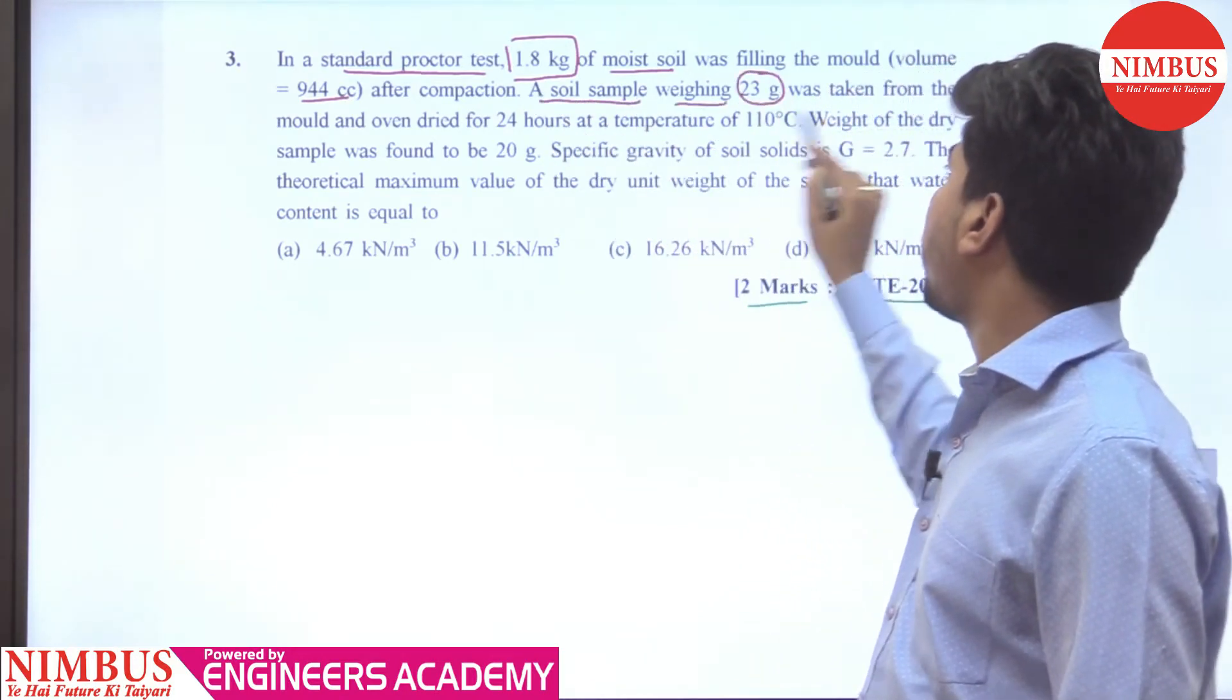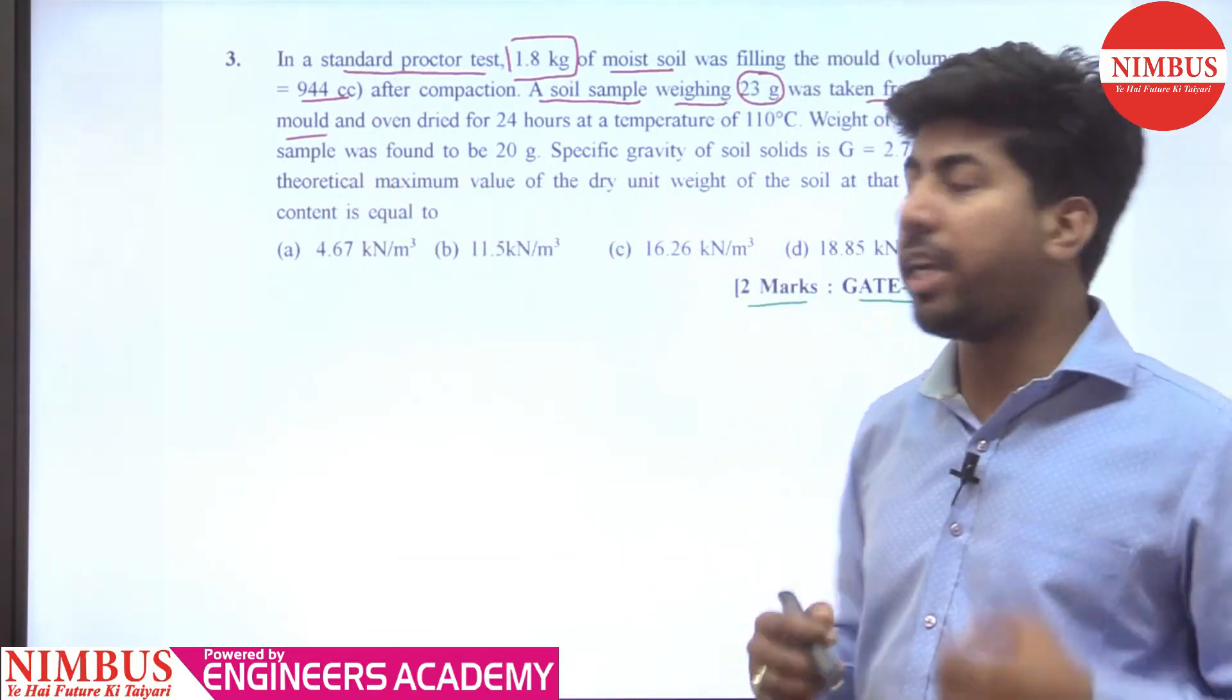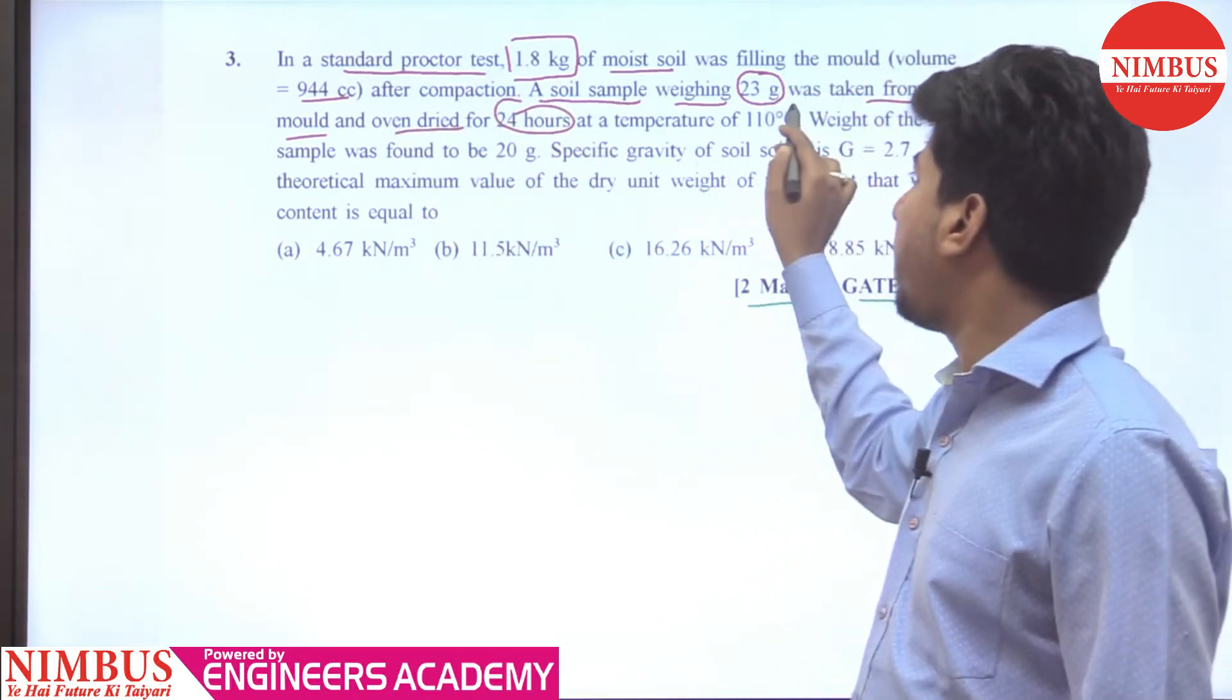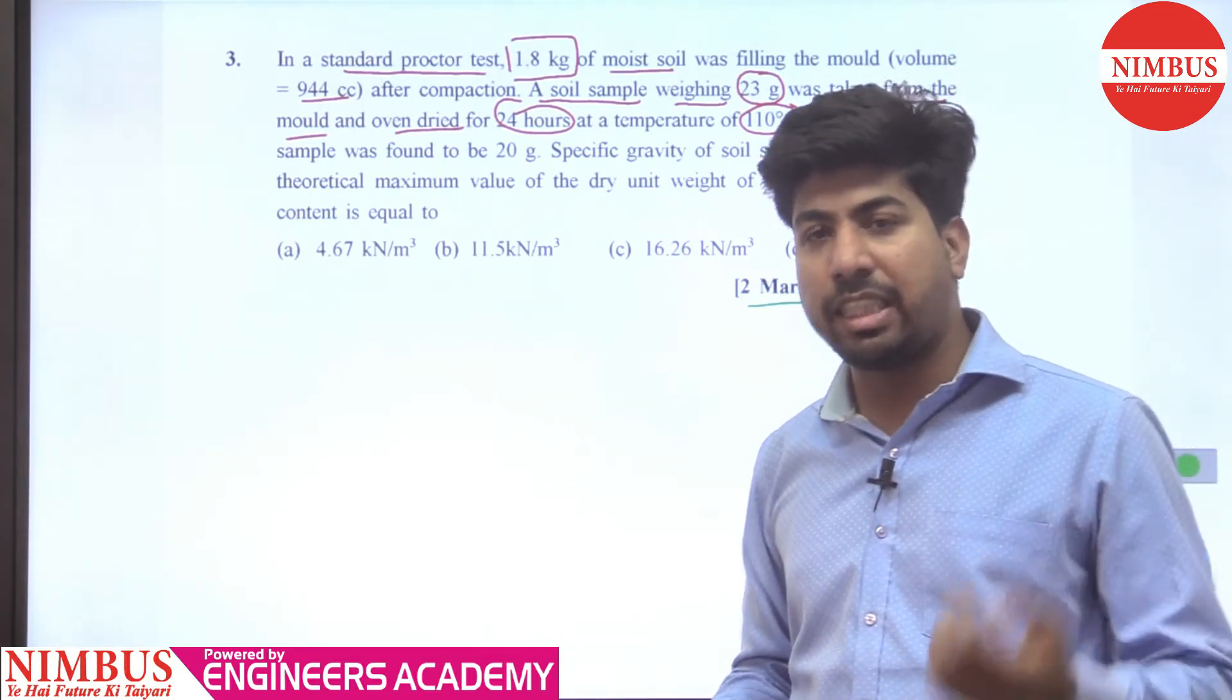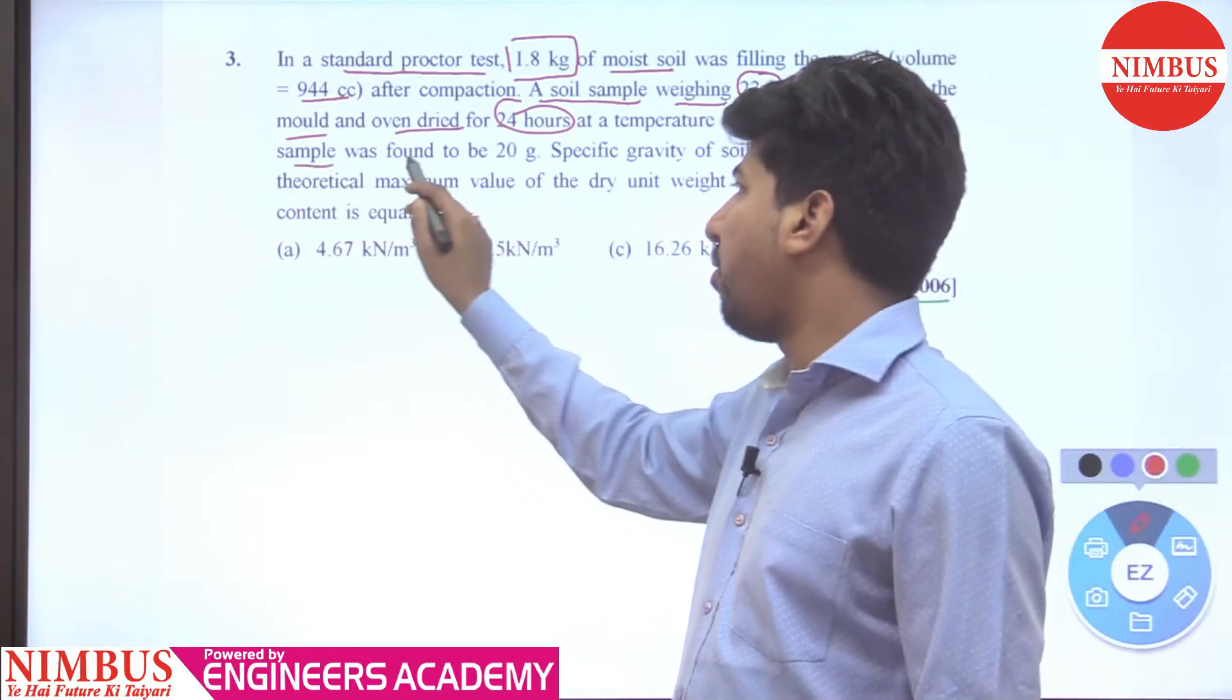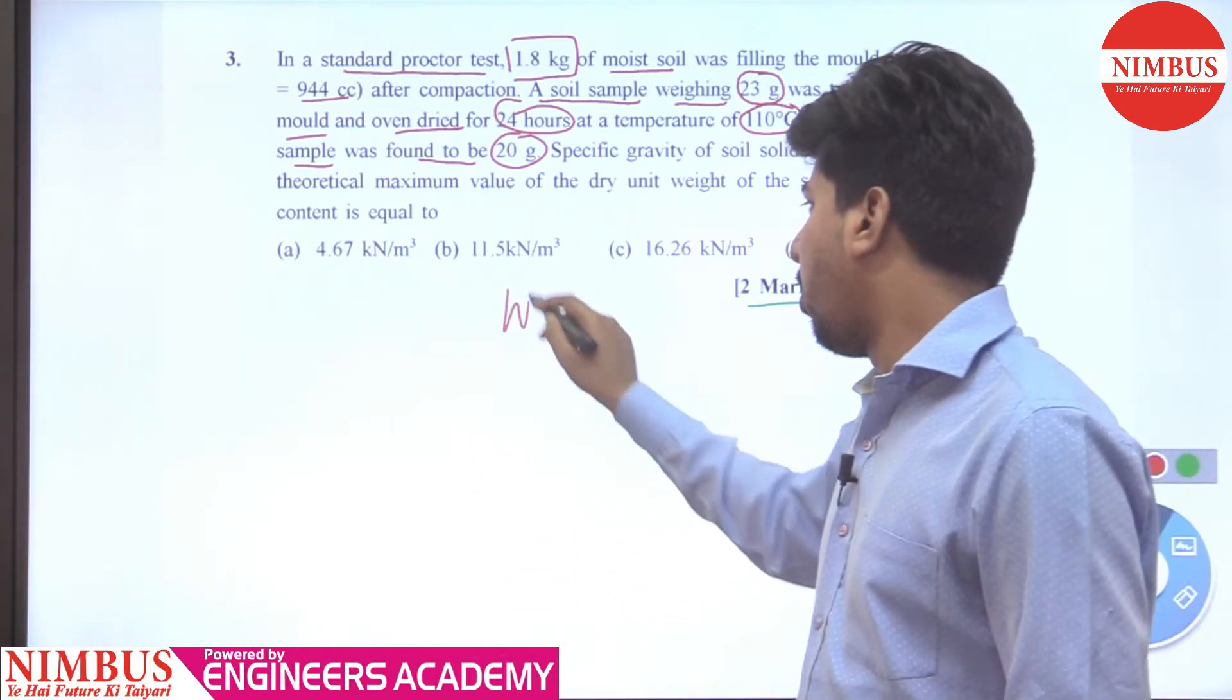1.8 kg moist soil was taken from the mold and oven dried for 24 hours at a temperature of 110 degrees Celsius. Then again the weight of the dry sample was found to be 20 grams.